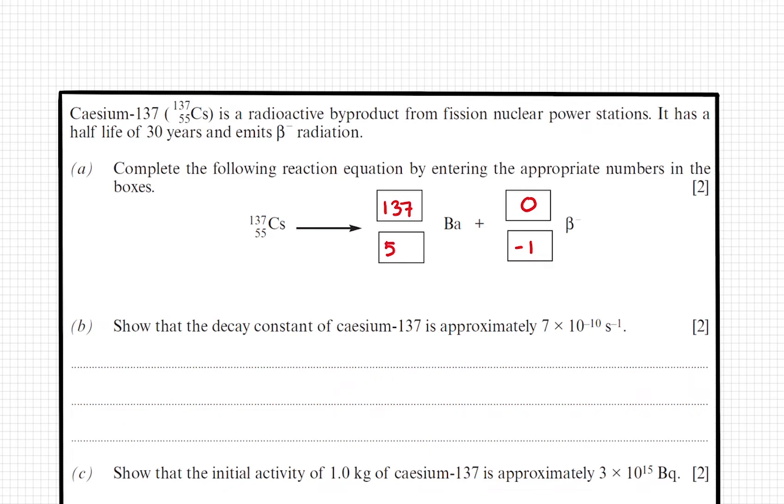Then we're asked to show that the decay constant is approximately 7 times 10 to the minus 10 seconds to the minus 1. We know that the decay constant is related to half-life, but the half-life is given in years. We have to turn it into seconds first.